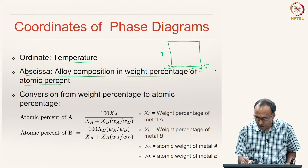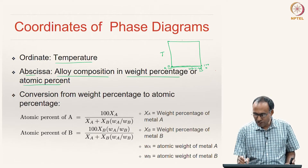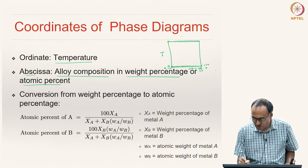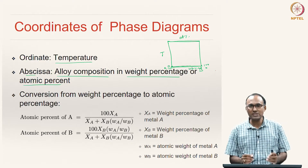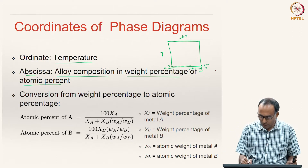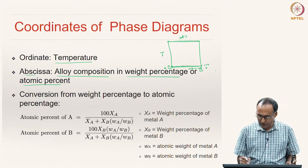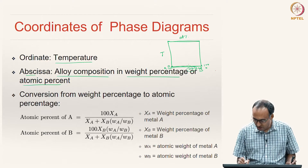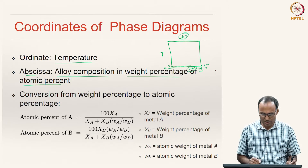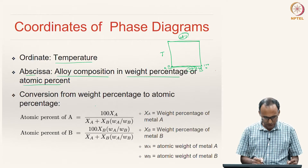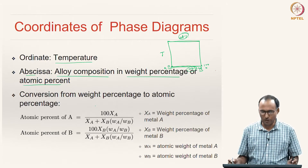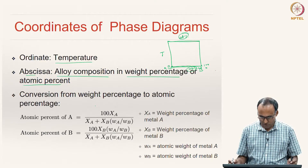Many times on the same phase diagram, you will use the top x-axis for atom percentage. So the same phase diagram can be read in both weight percentage as well as atom percentage, and we always know the conversion from weight percent to atom percent and vice versa.